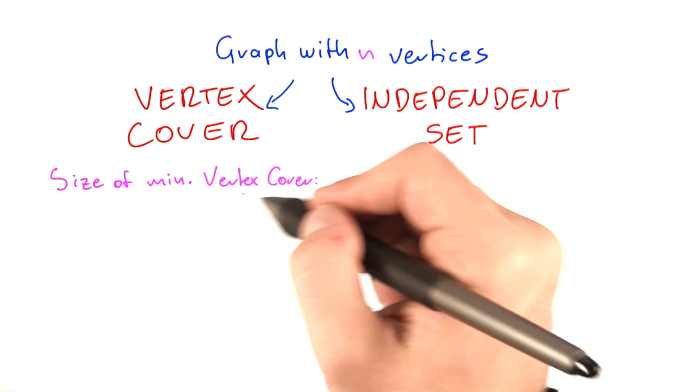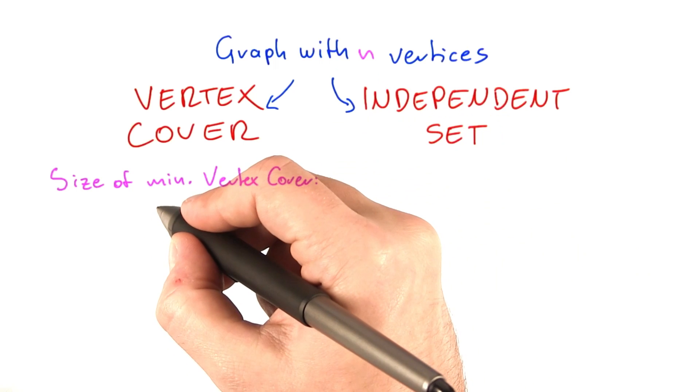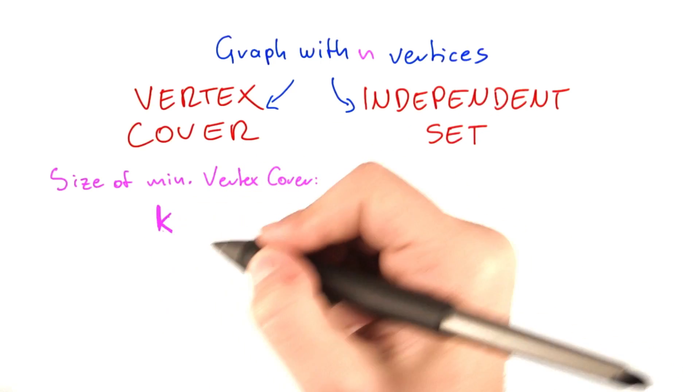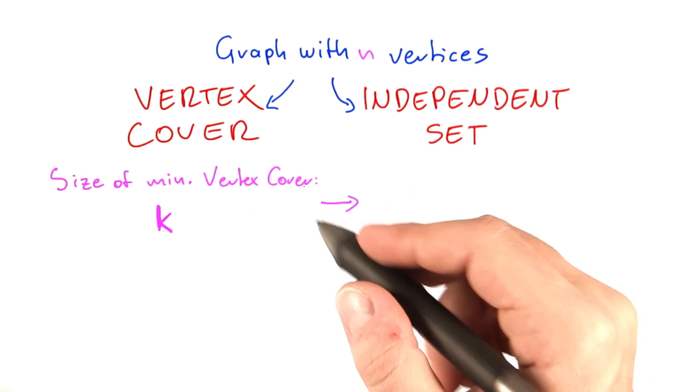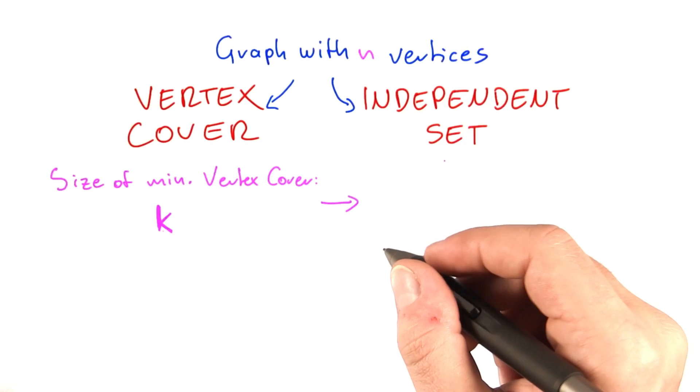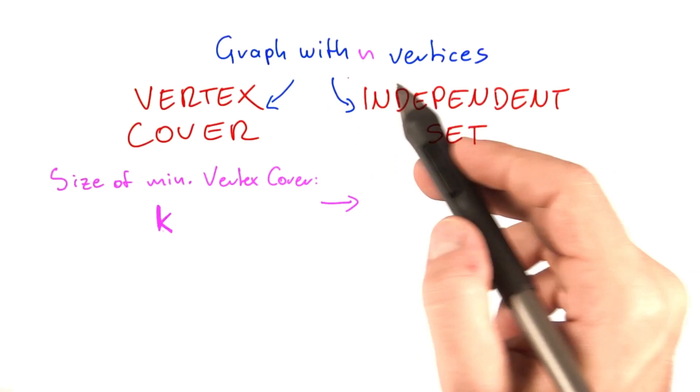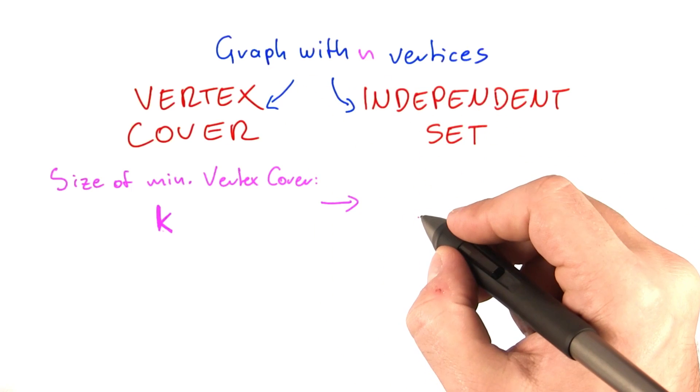Let's say the size of the minimum vertex cover for this graph is k, some integer smaller than n. From the reduction between vertex cover and independent set, the largest possible independent set we can find in this graph has size n minus k.